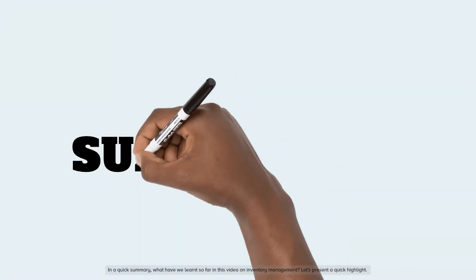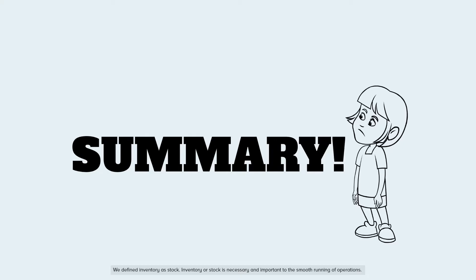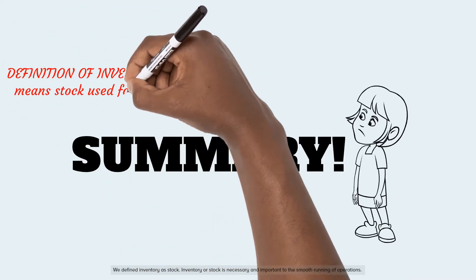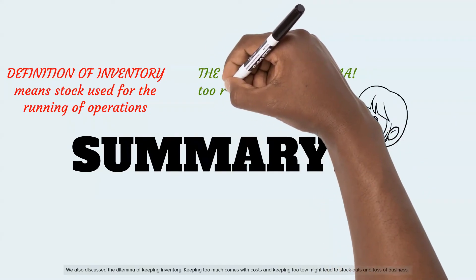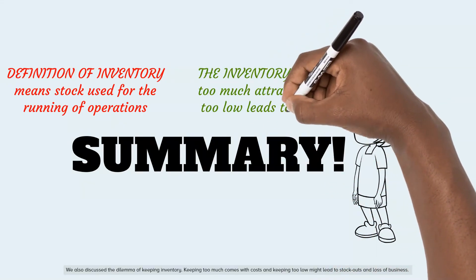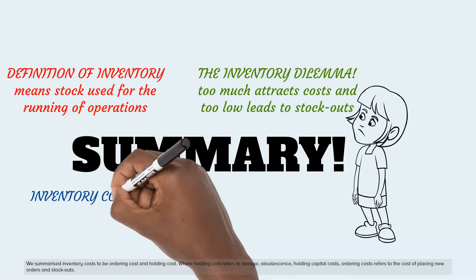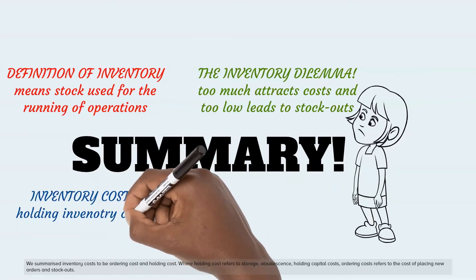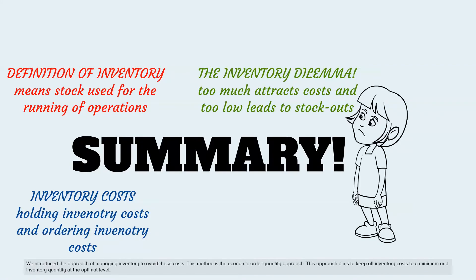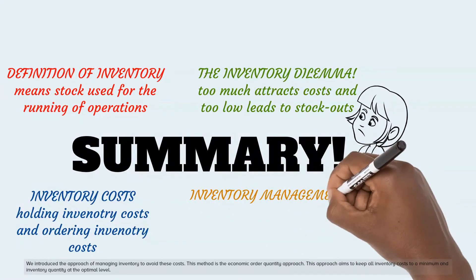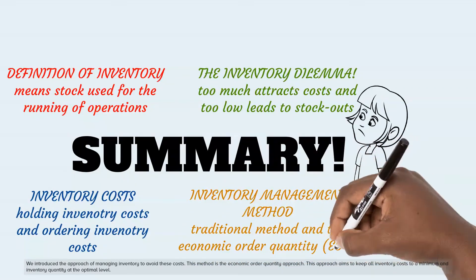In a quick summary, what have we learned in this video on inventory management? We defined inventory as stock, which is necessary and important to the smooth running of operations. We discussed the dilemma of keeping inventory — keeping too much comes with costs, and keeping too low might lead to stockouts and loss of business. We summarized inventory costs as ordering cost and holding cost. We introduced the economic order quantity approach, which aims to keep all inventory costs to a minimum and inventory quantity at the optimal level.